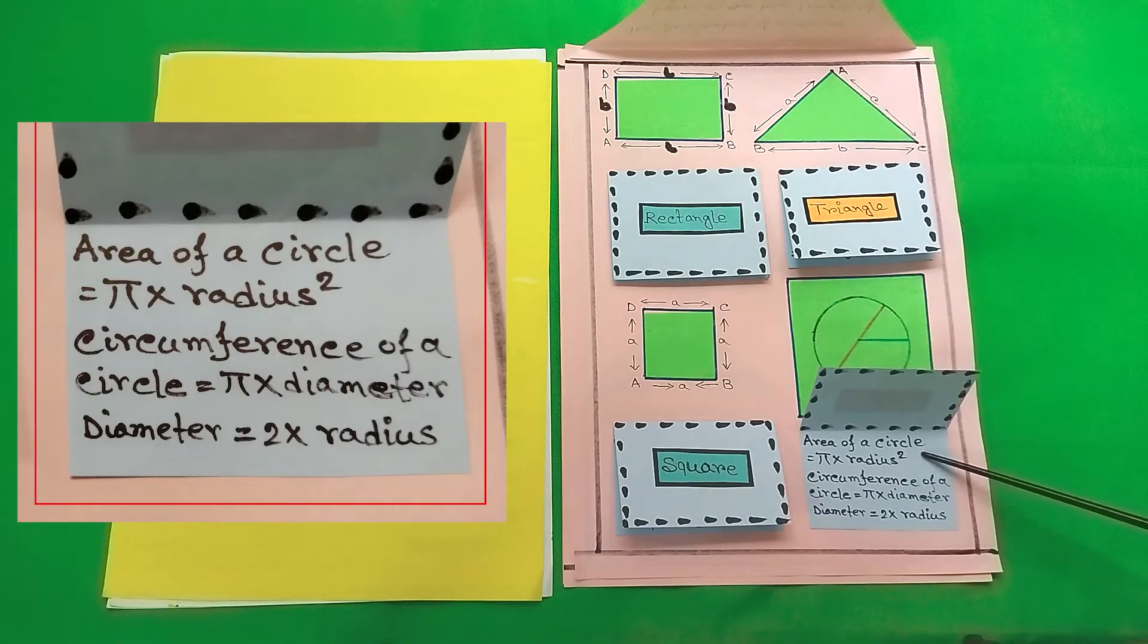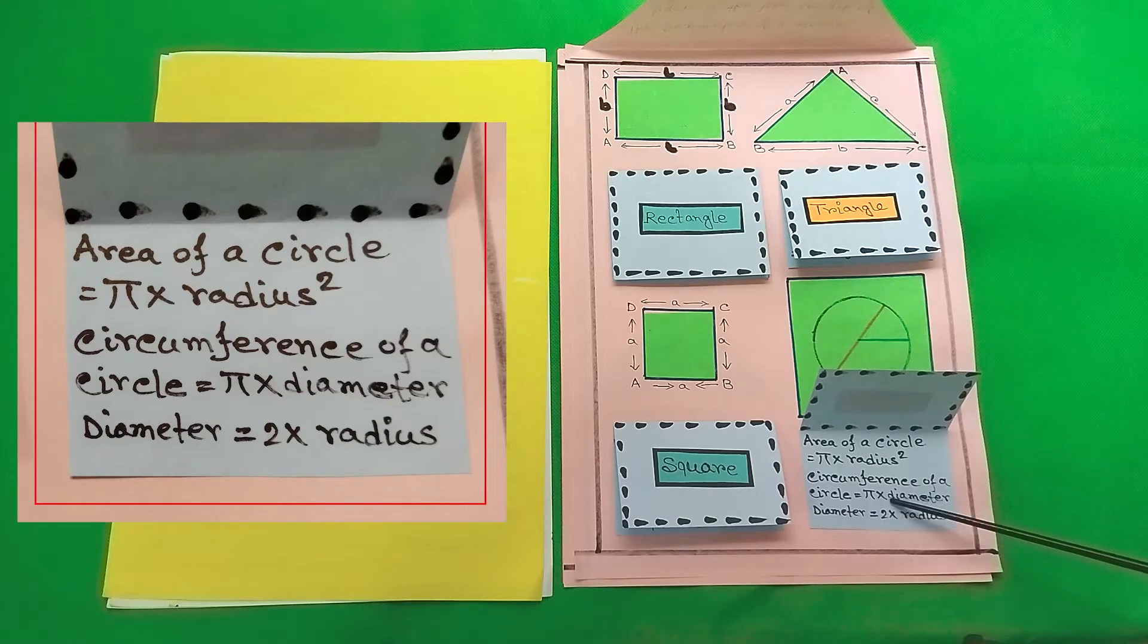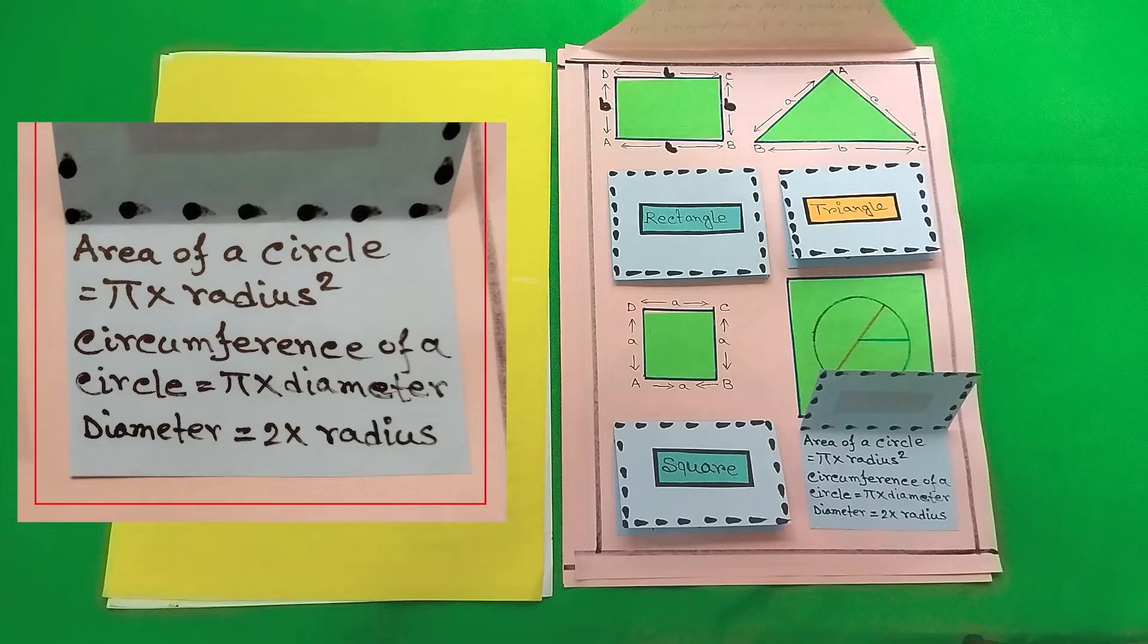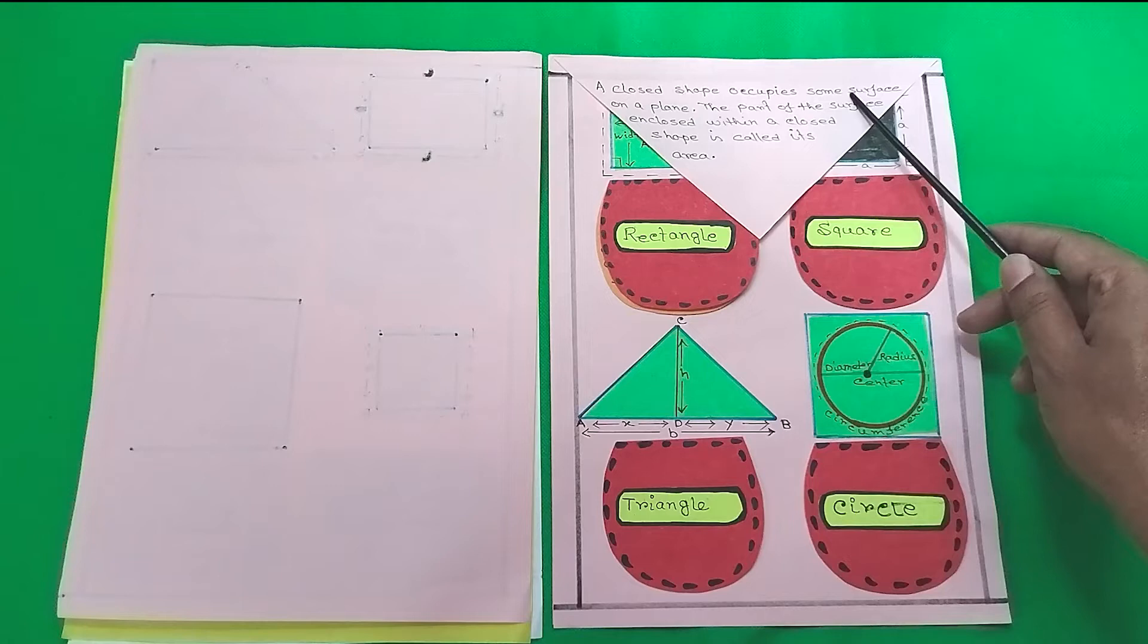And last but not least we have the circumference of a circle or perimeter of a circle. Circumference of a circle equals pi times diameter. Diameter equals 2 times radius. So next page we have area.